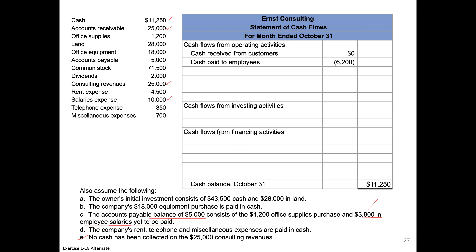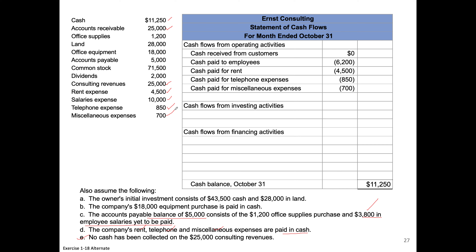Cash paid for rent: the note said rent was paid in cash, so that's a cash outflow of $4,500 shown in parentheses. Next, telephone expense of $850 was also paid in cash, so that's an outflow of $850. Miscellaneous expenses were paid out in cash as well — another outflow of negative $700.